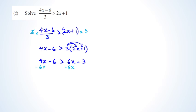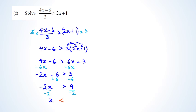Subtracting 6x from both sides gives 4x minus 6x minus 6 greater than 3, which is minus 2x minus 6 greater than 3. Wait — actually rearranging correctly gives minus 2x greater than 9. This is the only time you need to change the symbol: dividing by negative 2 on both sides flips the inequality, giving x less than negative 9 over 2 (or negative 4.5). That should get you a merit.